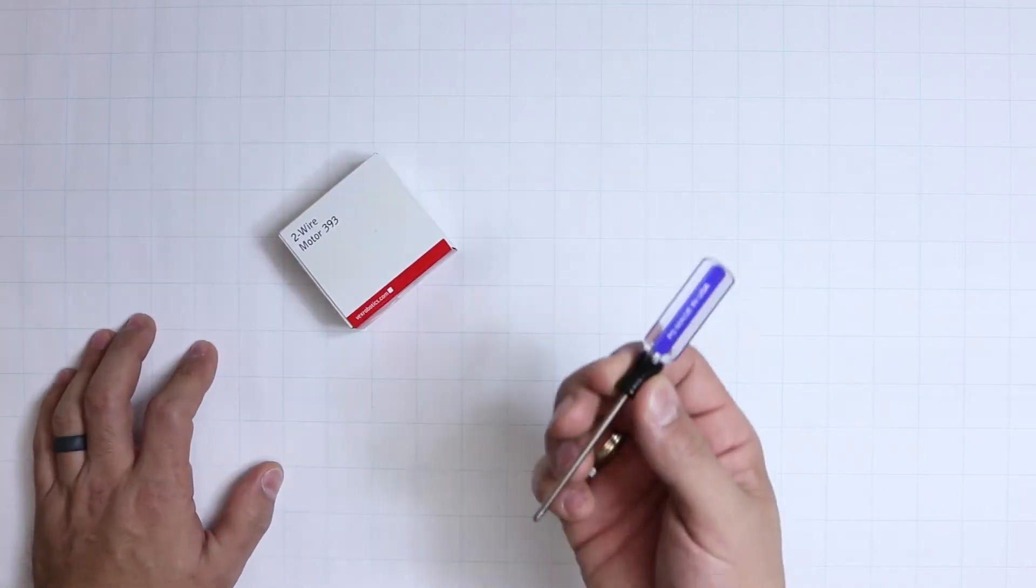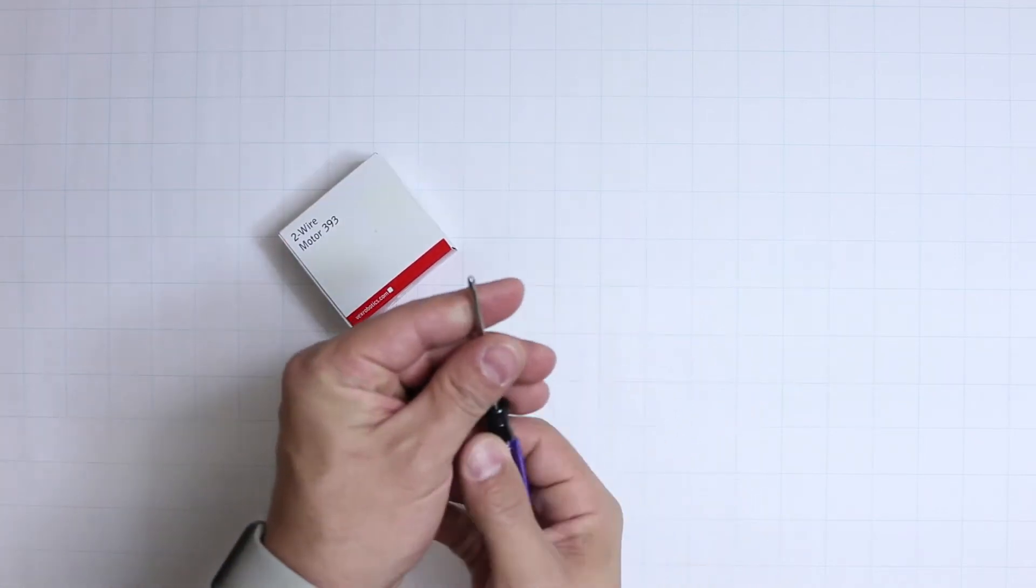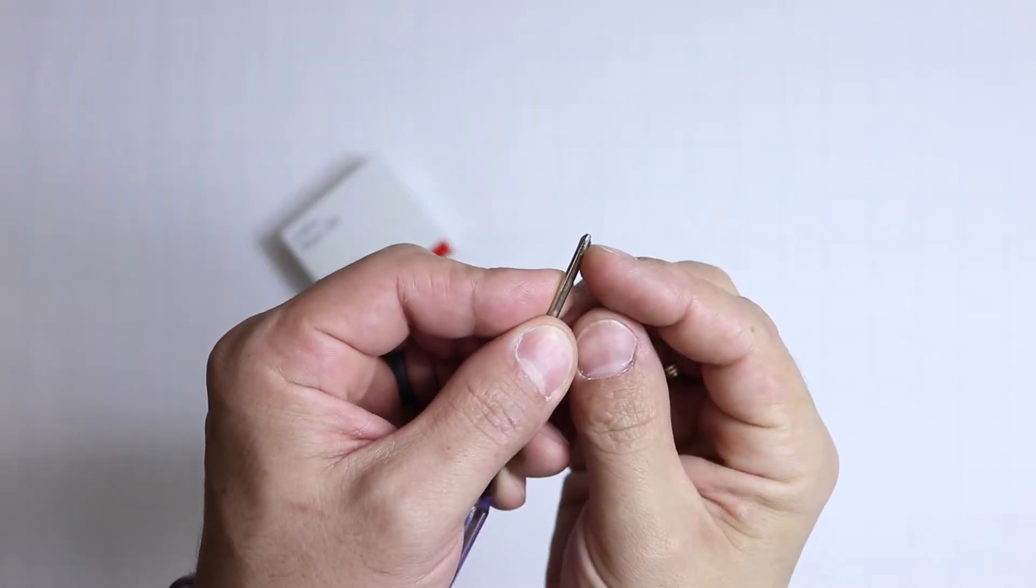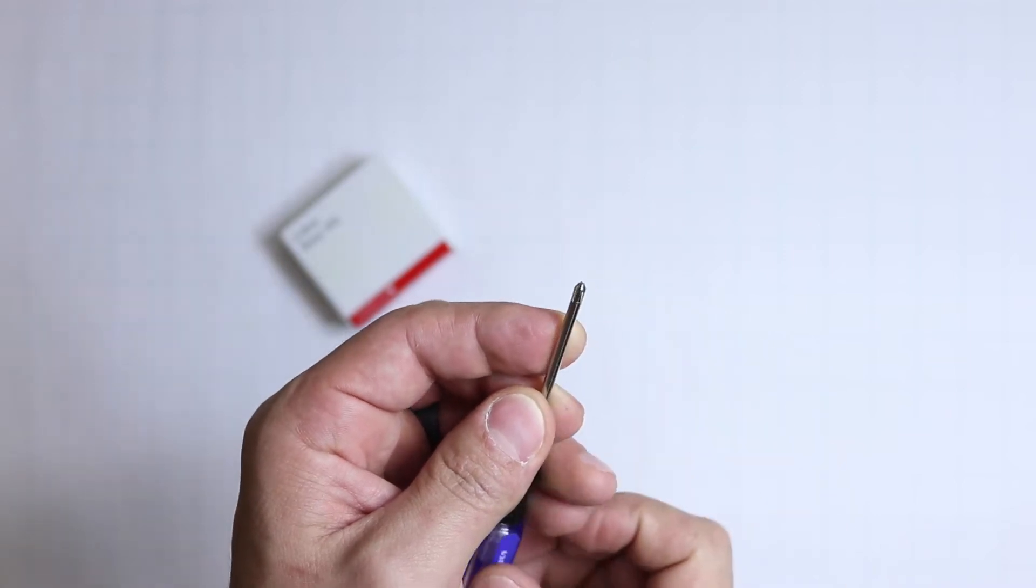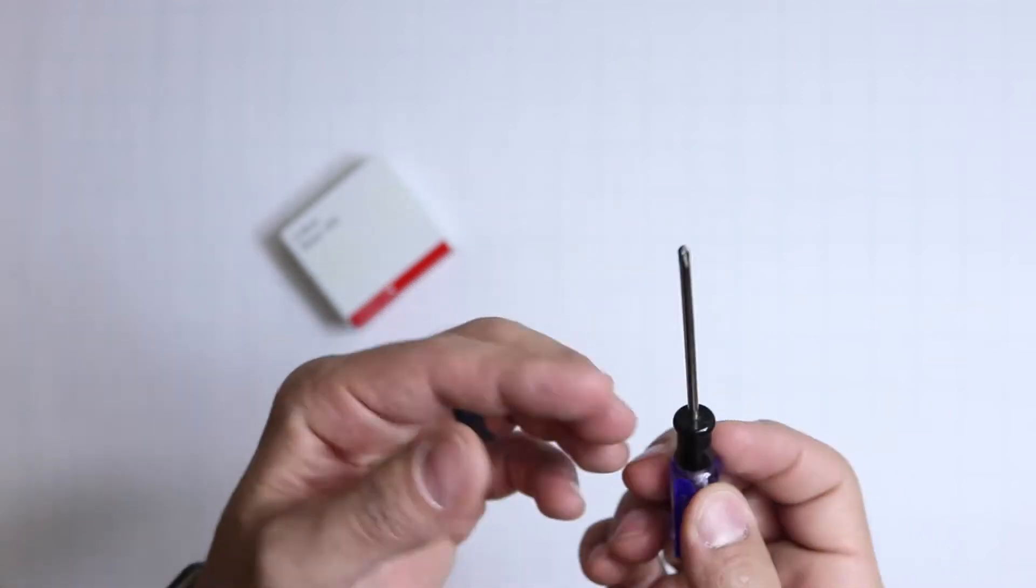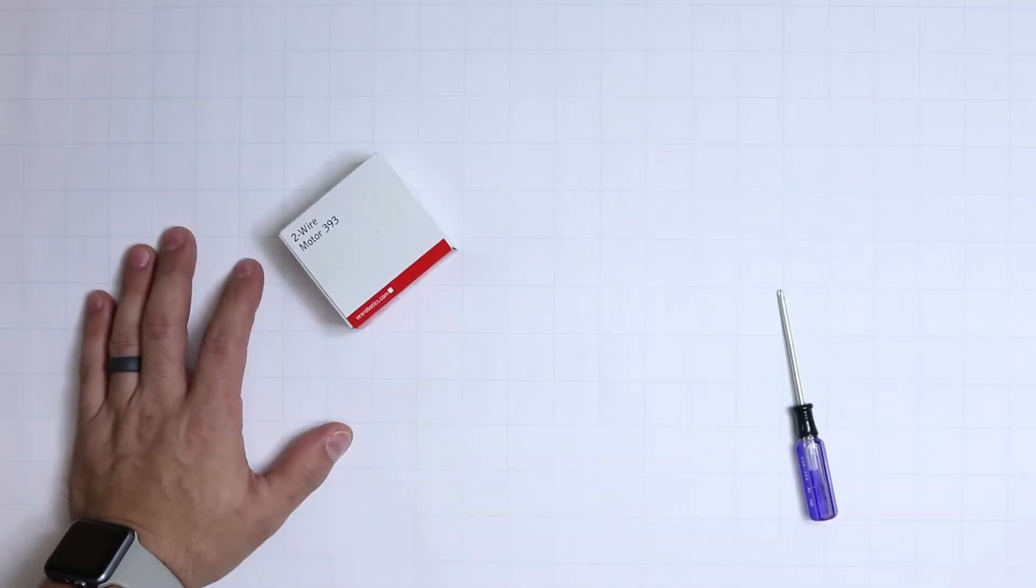We're going to need a couple things. We'll need our motor. You're going to need a small Phillips screwdriver. What I actually did with this one, I filed down this part to be flat. That's going to help a whole lot with getting everything just right. It actually sits in there better and doesn't strip the screw.